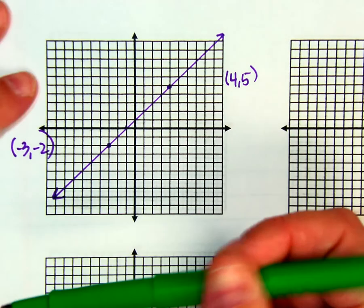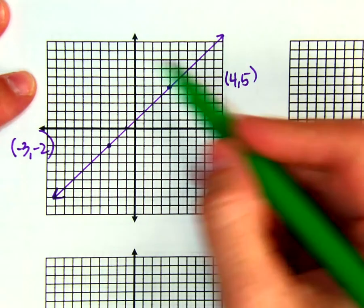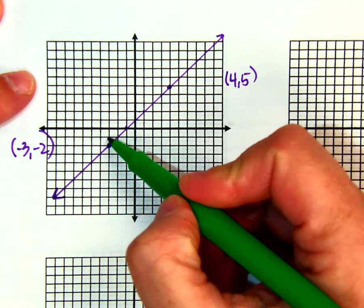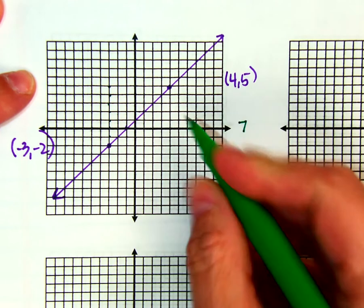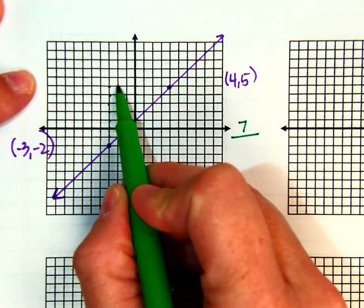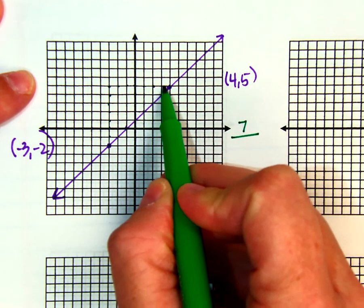We use the stair step method or the rise over run. So you counted 1, 2, 3, 4, 5, 6,